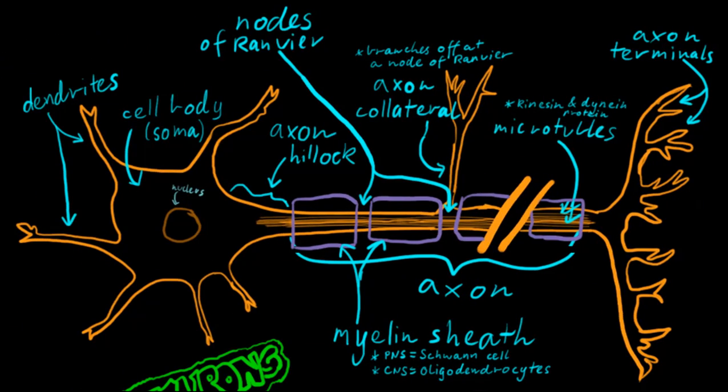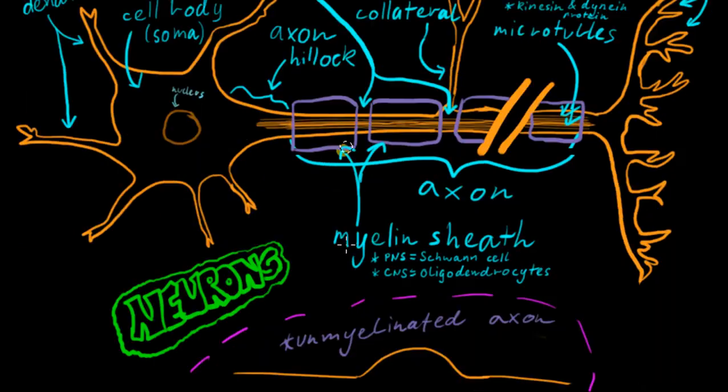Okay, this is an example of what a neuron might look like and it might look a little bit complicated or daunting, but bear with me. We're going to go through all these things individually and talk about what they do and how the neuron functions as a whole.